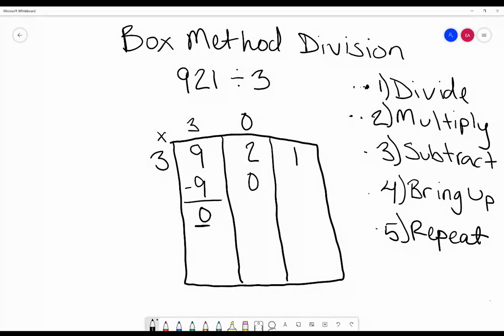We'll subtract 2 minus 0 which gives us 2. We bring up the 1 here and again repeat.